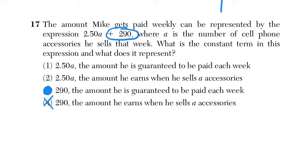290 is the amount he's guaranteed. There's no variable connection. He's going to get 290 bucks. If we look at choice 4, that's talking about a variable, which there's not one connected. That doesn't make any sense. So choice 3 is our answer. One of the easier questions on the exam.